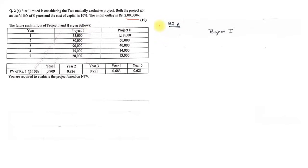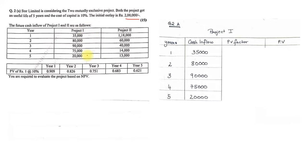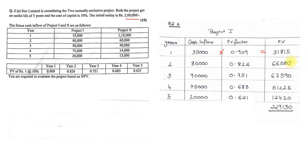For Project 1, we create a table with four columns: Years, Cash Inflow, PV Factor, and PV. The years are 1 to 5. Cash inflows are 35,000; 80,000; 90,000; 75,000; and 20,000. PV factors at 10 percent are 0.909, 0.826, 0.751, 0.683, and 0.621. To find the present value, multiply each cash inflow by the corresponding PV factor.